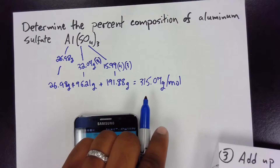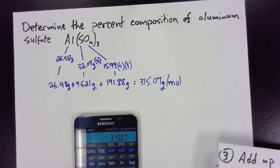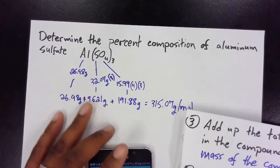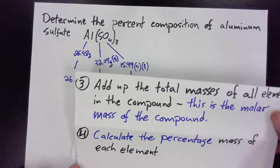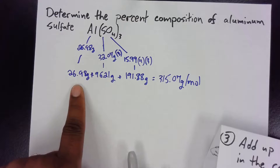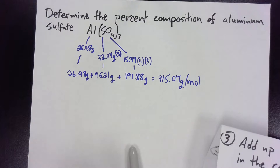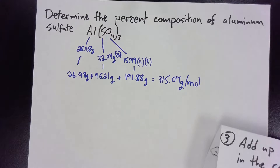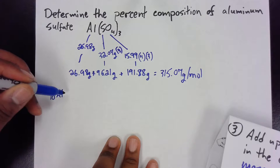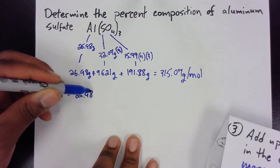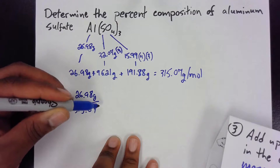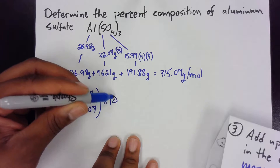This is important — this is how we calculate the percent composition, which is our last step. We calculate the percentage mass of each element by taking the total mass of each element, dividing it by the molar mass, and multiplying by 100. For example, the percent of aluminum is going to equal 26.98 grams divided by 315.07 times 100.